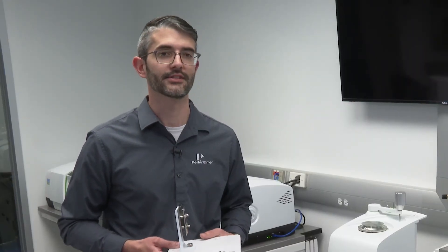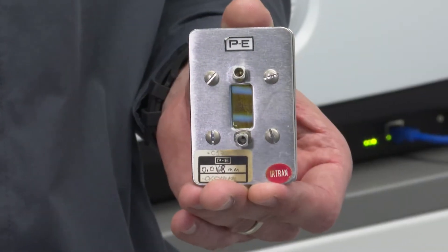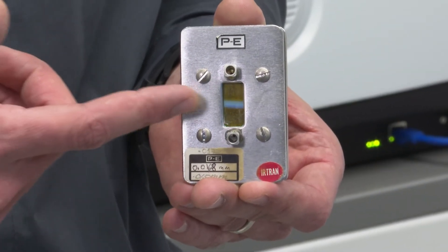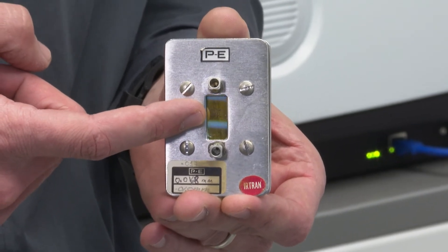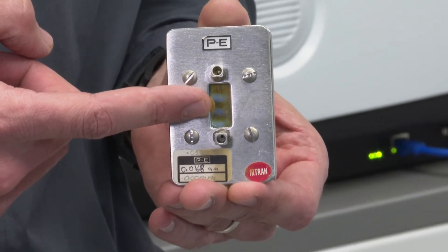When working with solids, liquids, or gases, typically transmission measurements are performed. As an example, with a liquid cell, the window material can be selected to allow measurement in the preferred spectral range for that material type.